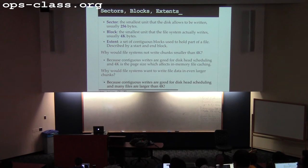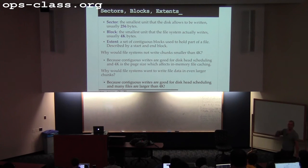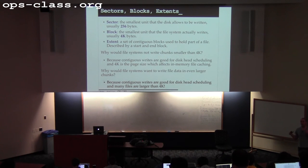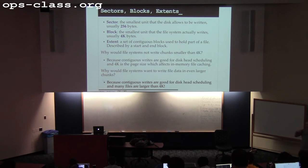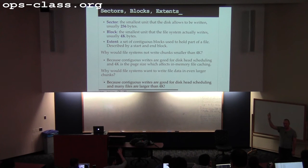From a disk scheduling perspective, larger extents mean reading more data from the same part of the disk. File systems have evolved around the fact that people are storing much larger files. Disks have gotten so big that trading off a little waste for better performance for video and audio is worth it — most people have terabytes of storage. How many people are out of storage on their machine? Only a couple. You guys have enough space.